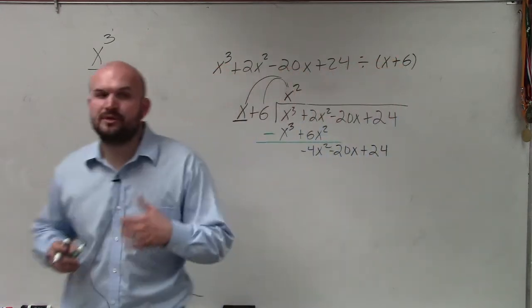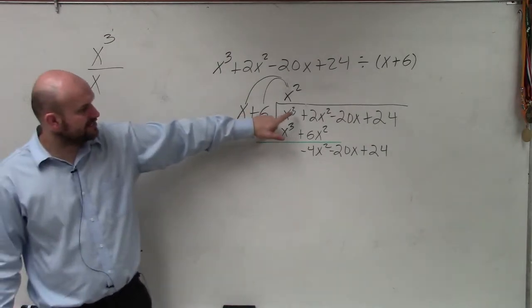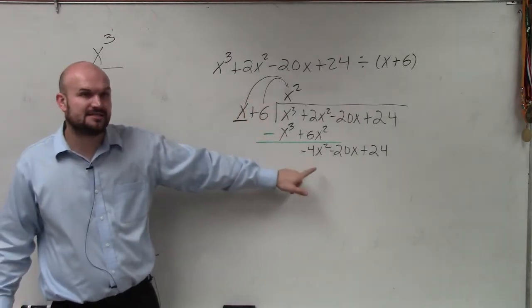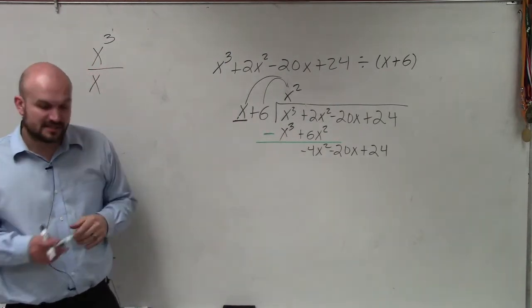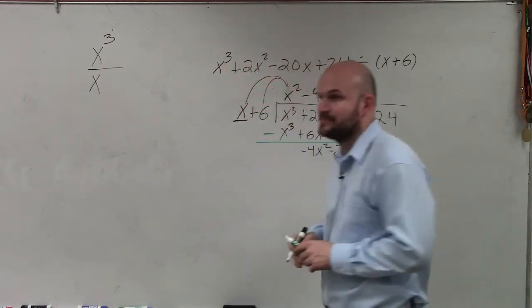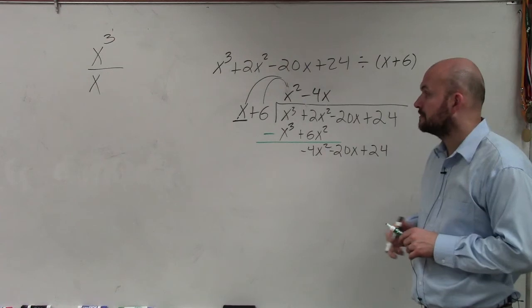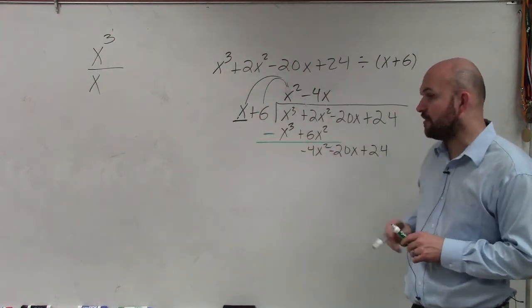Now, again, what we look into is following the same process. We say x, rather than going into x cubed, is now going to go into my next first term, which is negative 4x squared. So x divides into negative 4x squared, negative 4x times.